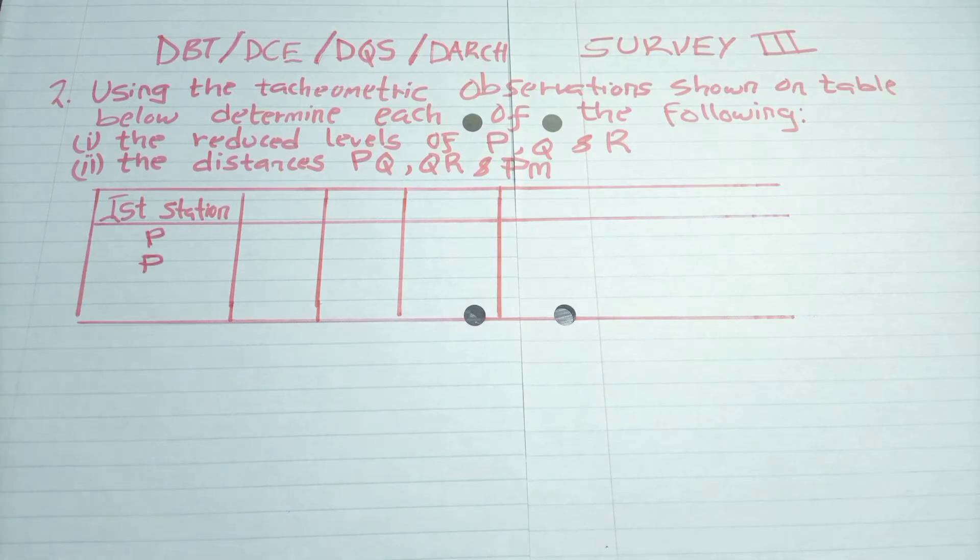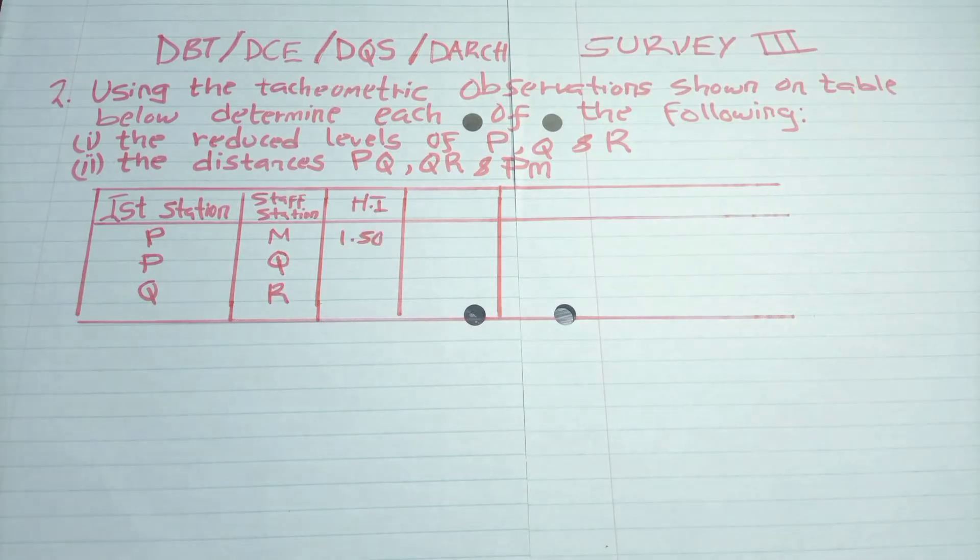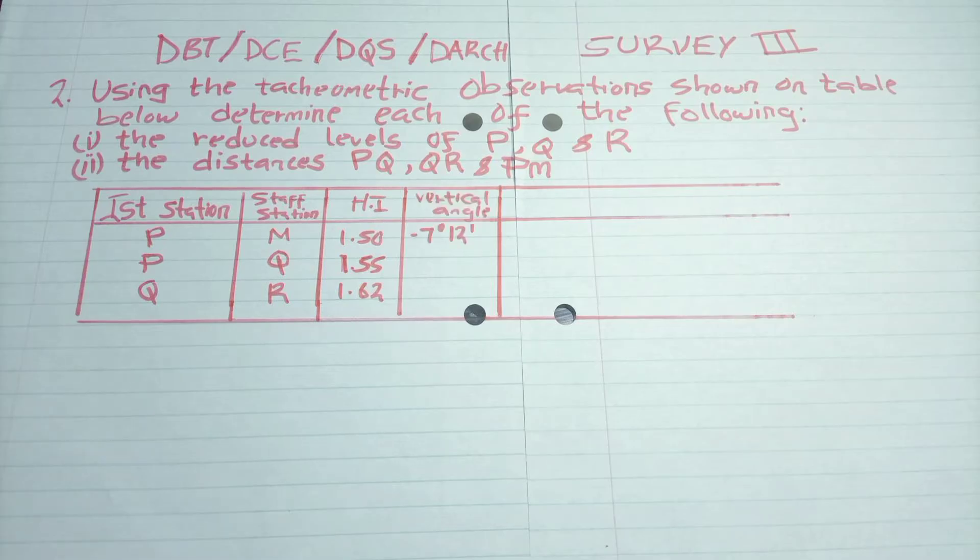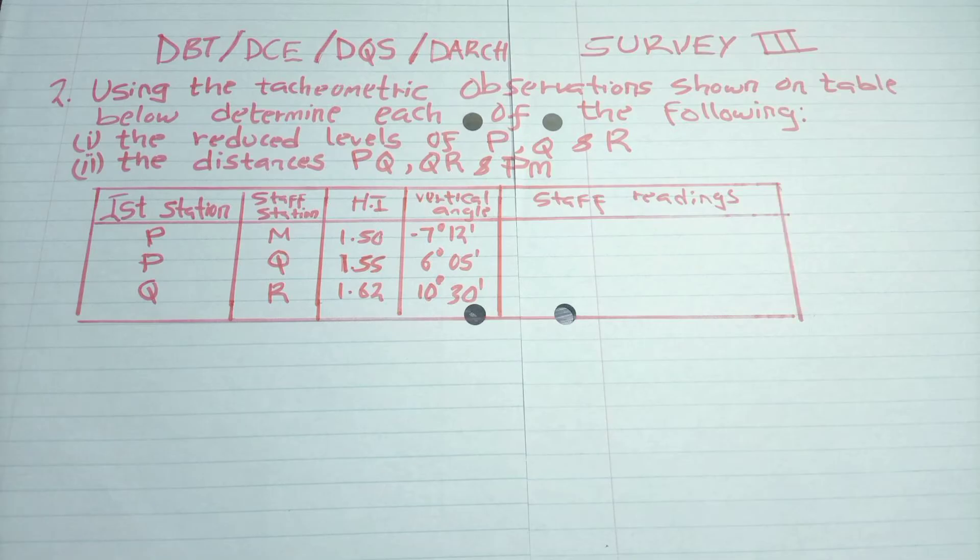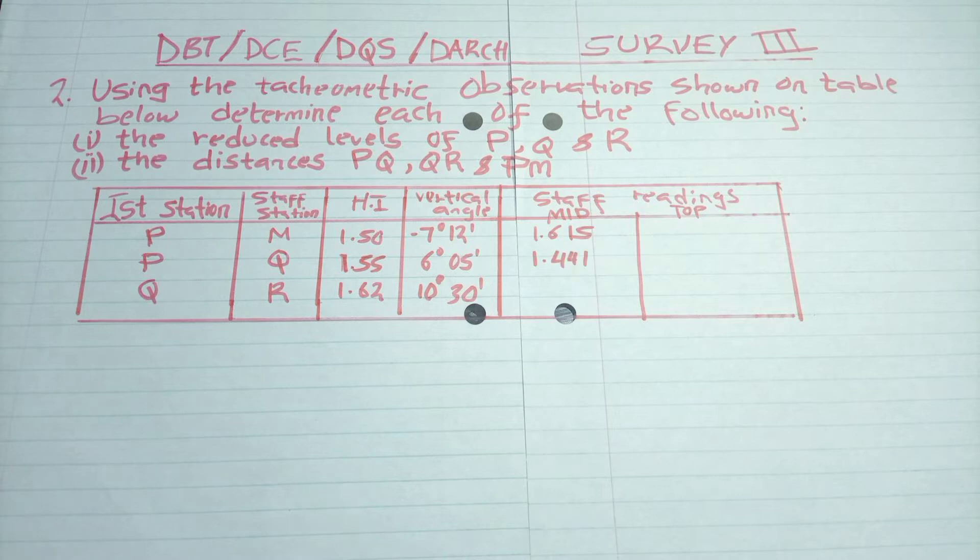Then the instrument station we have P, P, and Q. So these are readings to staff stations. Then we have the height of instrument, which are different. Then we have different vertical angles. And we have a negative there, showing we have a slope, a depression.